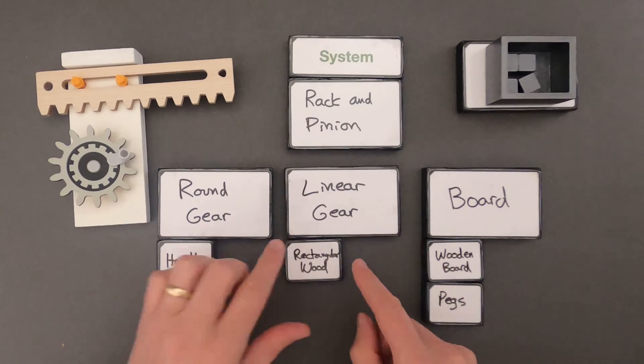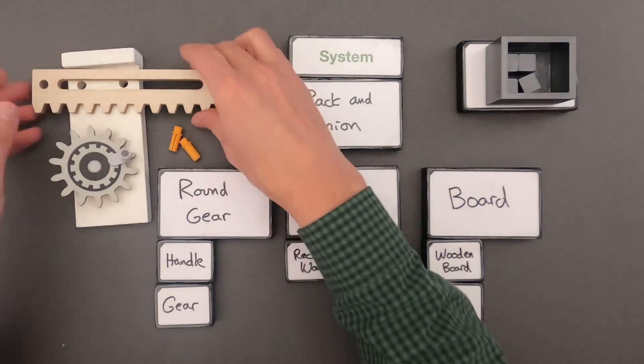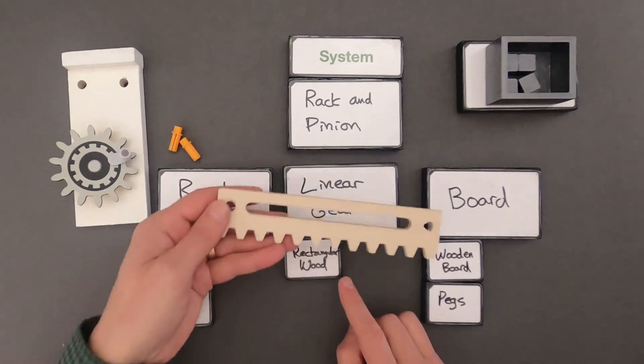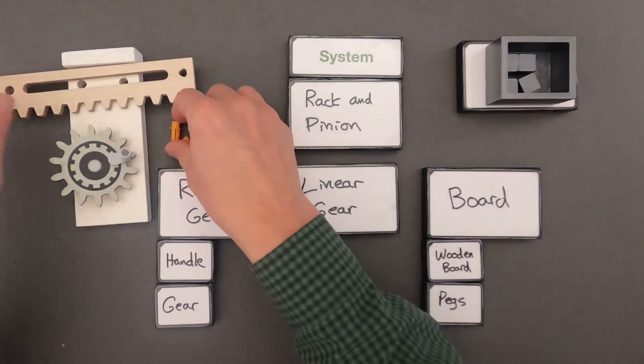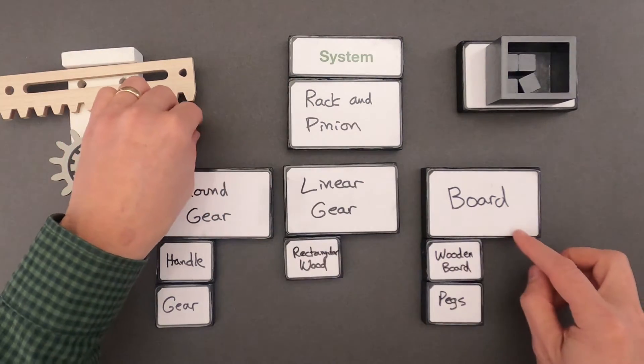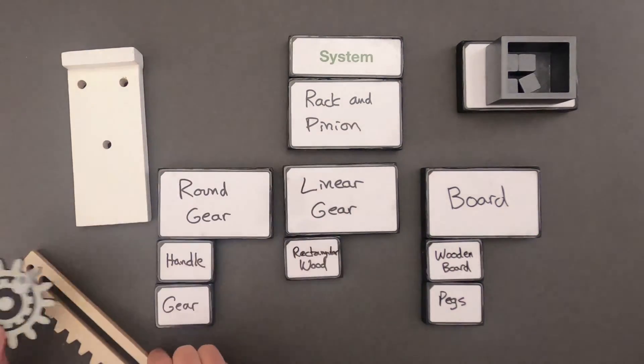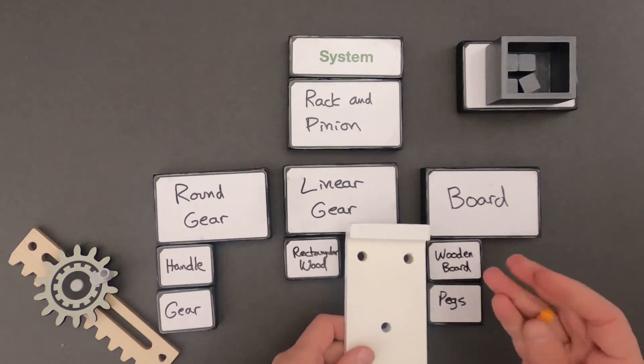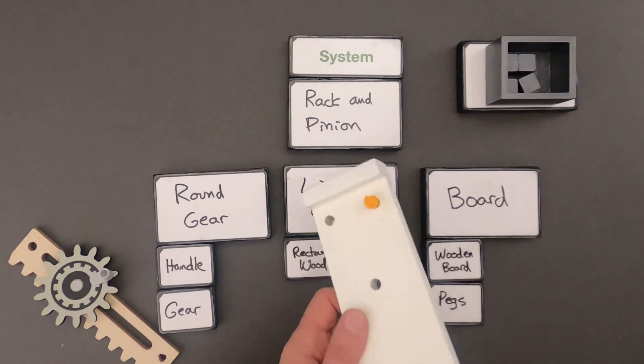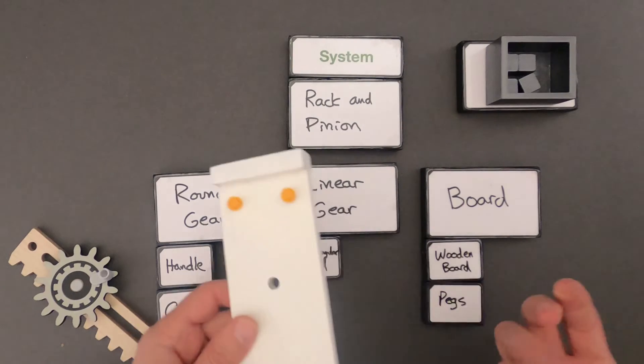I really didn't have a part within the linear gear so the linear gear is just a piece of wood. So I called that rectangular piece of wood a system. And then finally within the board, if we look in the background, the board contains the wooden board but also contains these pegs. And those pegs hold the linear gear in place.